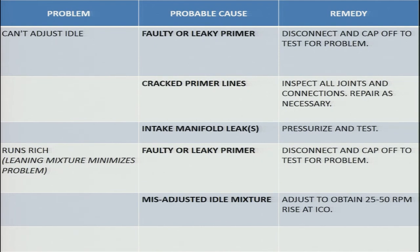If the mixture is running rich and leaning the mixture minimizes the problem, probable causes are a faulty or leaky primer and idle mixture not properly adjusted. For a leaking or faulty primer, the rectification action is to disconnect and cap off to test for the problem. If idle mixture is misadjusted, adjust it as per the engine manual to obtain a 20 to 50 RPM rise.